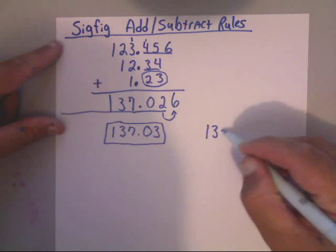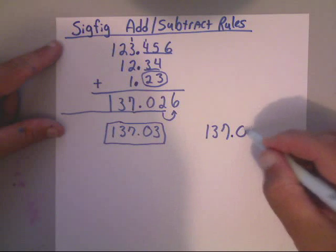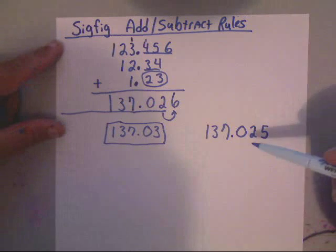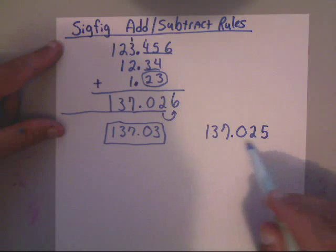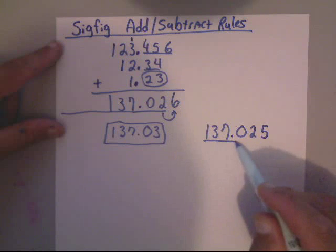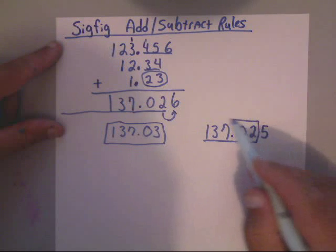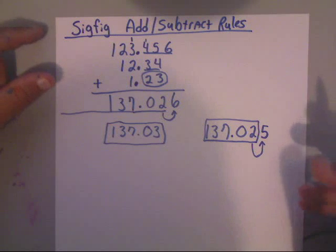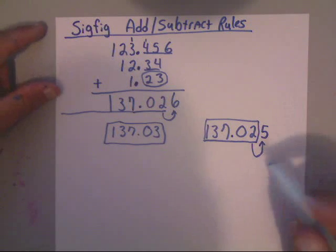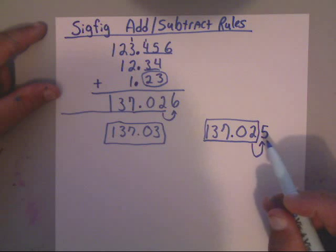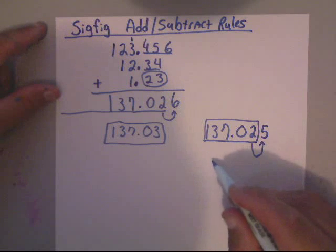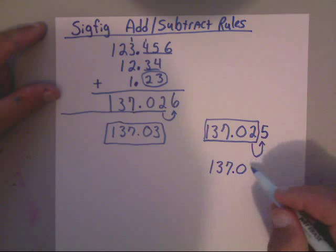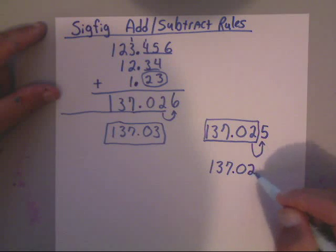Now the only rules that are weird is when you have fives. Let's say you had 137.025 instead. Now the five is kind of different. We know we want to keep this right here, but we need to know if we need to round this two up.